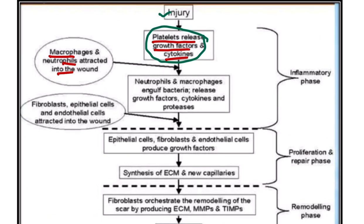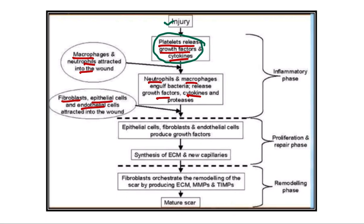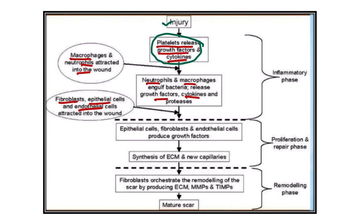These chemotactic agents are released from the platelet and from the injured endothelial cells. Neutrophils and macrophages engulf bacteria and release growth factors, cytokines, and other substances. After that, fibroblasts, epithelial cells, and endothelial cells are attracted to the wound. The most immediate event is platelet degranulation, then neutrophils come, then macrophages.